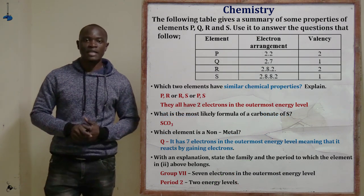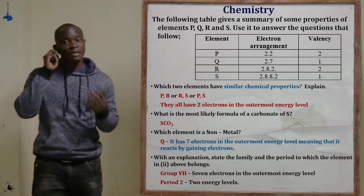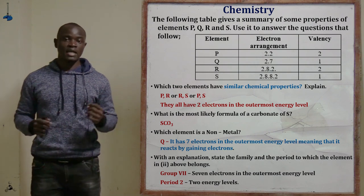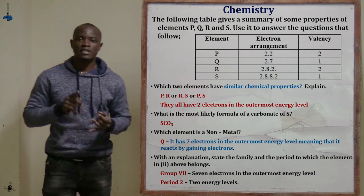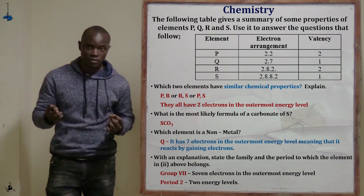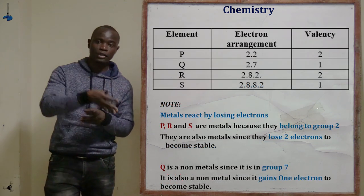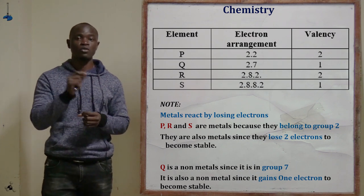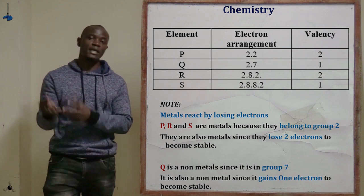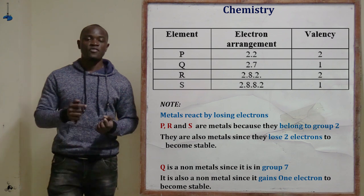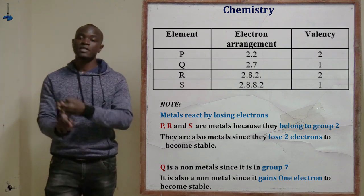Question part c asks to identify the non-metal in the group. The non-metal is element Q. In chemistry, metals react by losing electrons while non-metals react by gaining electrons. Elements P, R, and S each have two electrons in the outermost energy level, so it is easier for them to lose two electrons than to gain six. Therefore P, R, and S are metals.